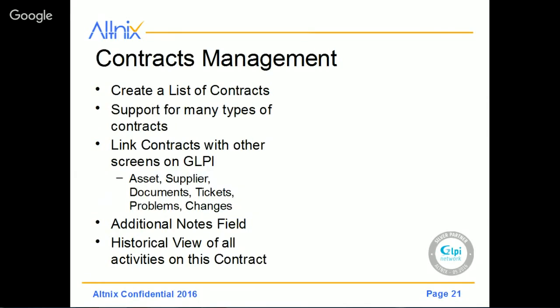There's also contracts management. A big part of managing IT is managing IT support, which includes warranties and support contracts. Warranty could be for hardware contractor support, or it could be for a software service. All these types of contracts can be managed through the contracts management module. Here's where you create a list of contracts, specify the type of contract, the time period for the contract's coverage, when it's going to expire, and whether you want to automatically renew the contracts. The contract screen can also be linked with other GLPI elements such as assets, suppliers, tickets, problems, and changes.